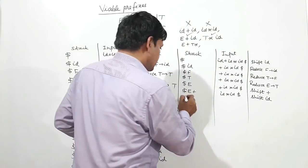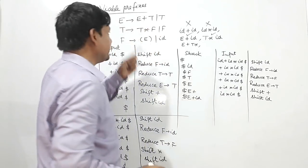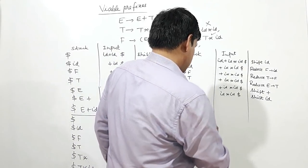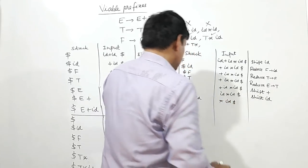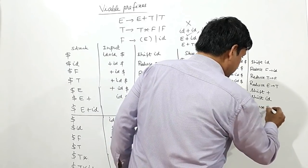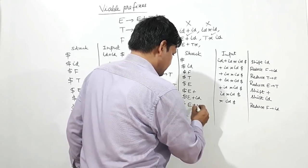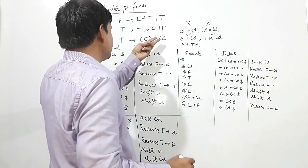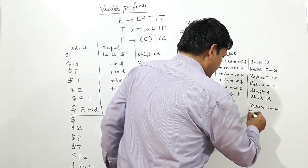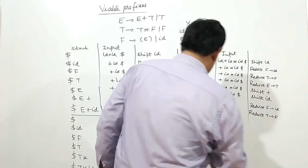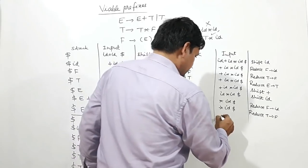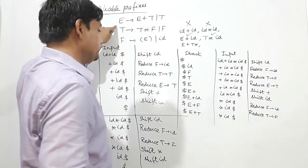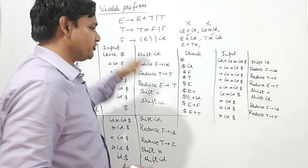So dollar E plus ID — I have to reach T — reduce ID by F: dollar E plus F star ID dollar. E plus F — no match — so reduce F by T: dollar E plus T star ID dollar. E plus T can be reduced to E, but E star — no match of E and star.